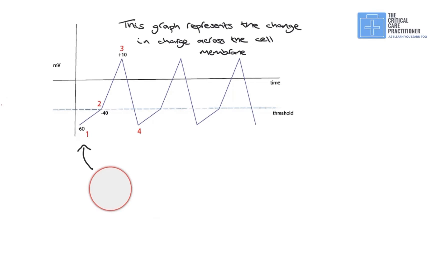So this circle represents the cell and the membrane, and we're at point one here, so we're very negative. And what's happening here is the sodium is slowly leaking into the cell, gradually increasing the positive charge. So the line goes upwards quite steadily to point two.